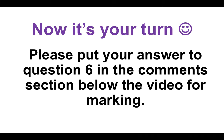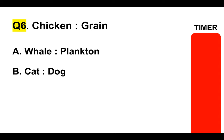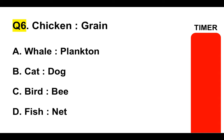Now it's your turn again. Please put your answer to question six in the comments section below for marking. Chicken and grain. Is it A, whale and plankton; B, cat and dog; C, bird; or D, fish and net? Here's your timer.